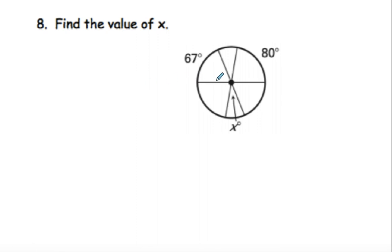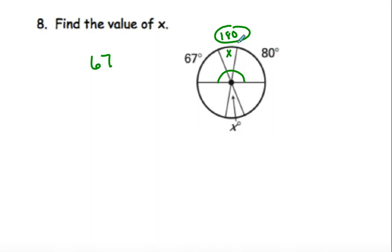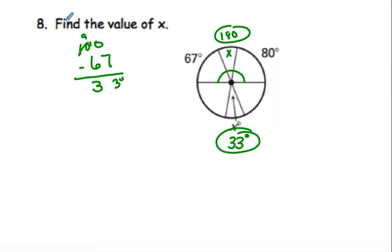We know that this side is equal to 180 degrees. We know that if this is X, this is also X because they are vertical angles. So the whole thing is 180. We do 180 minus 80, which is 100, and then 100 minus 67. That gives me 33 degrees. So if that's 33 degrees, this is also 33 degrees.